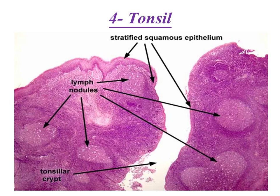The tonsil is formed of lymphatic nodules, and in between the lymphatic nodules we have the scattered or diffuse lymphatic tissue formed of the same three elements found in germinal centers in the lymph node or spleen: the lymphocyte, the plasma cell, and the macrophage. The lymphatic nodules here may have germinal centers or not, and they are arranged around the crypts.